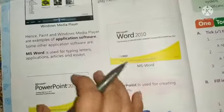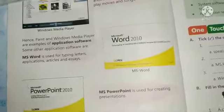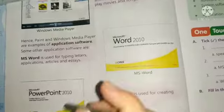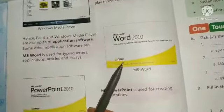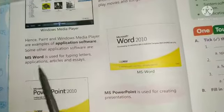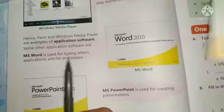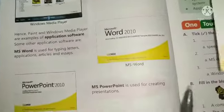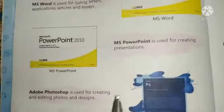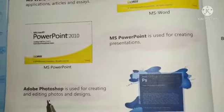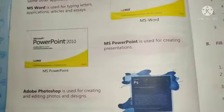These are all application software — each designed for a specific purpose. If we want to make a calculation, we open a calculator. To check dates, we open a calendar. To type a letter, essay, or article, we open MS Word. To create a presentation, we open PowerPoint. For photo editing or design, we open Photoshop. There are many software that help us do our work.